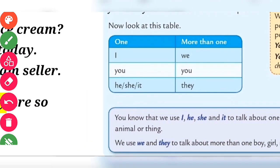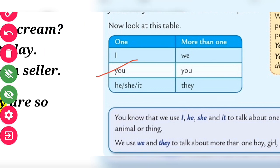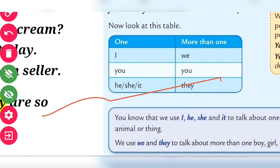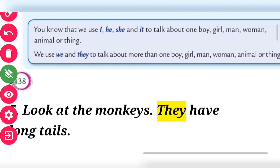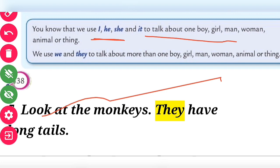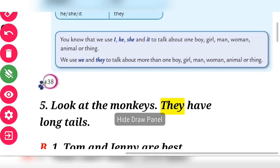'I' is used for one person, 'we' for more than one, 'you' for one or more than one, 'he,' 'she,' 'it' for one person, and 'they' for more than one. So these are the plural forms of the singular words. We use 'I,' 'he,' 'she,' and 'it' to talk about one boy, girl, man, woman, animal, or thing. We use 'we' and 'they' to talk about more than one.